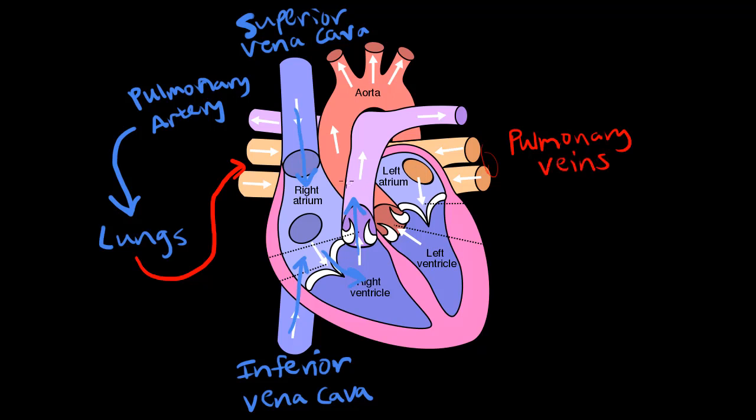And just a quick note, the arteries always mean away from the heart. So here, the pulmonary artery is carrying blood away from the heart, and the veins mean to the heart. So we're carrying blood to the heart here.